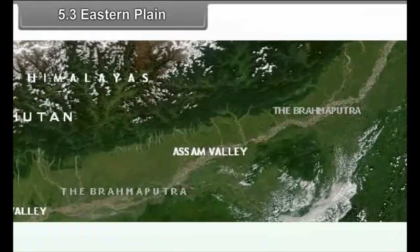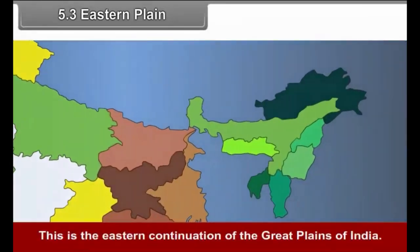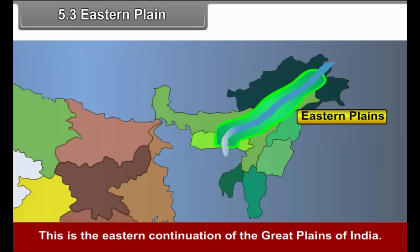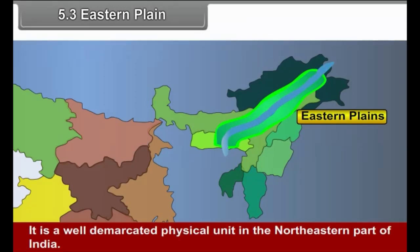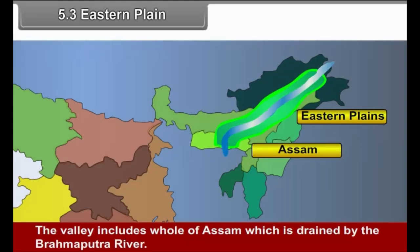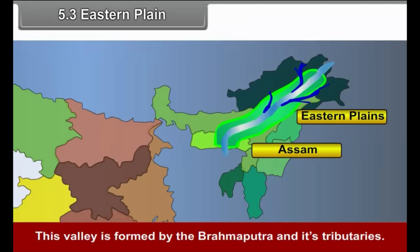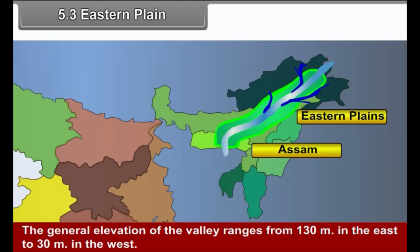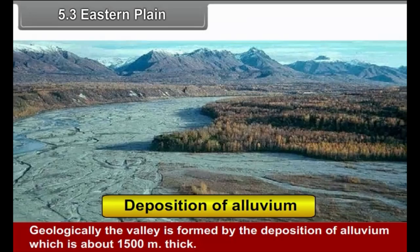5.3 Eastern Plain. This is the eastern continuation of the Great Plains of India and a well-demarcated physical unit in the northeastern part of India. The valley includes the whole of Assam, which is drained by the Brahmaputra River. This valley is formed by the Brahmaputra and its tributaries. The general elevation of the valley ranges from 130 meters in the east to 30 meters in the west. Geologically, the valley is formed by the deposition of alluvium which is about 1500 meters thick.